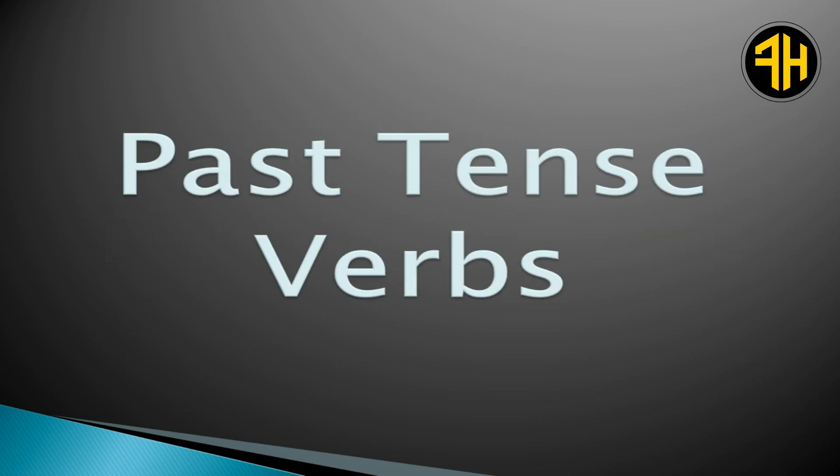Past tense verbs: Verbs which tell about actions which happened some time ago are past tense verbs. For example, 'The dog wanted a bone.' Here 'wanted' is a past tense verb because the action has already happened.